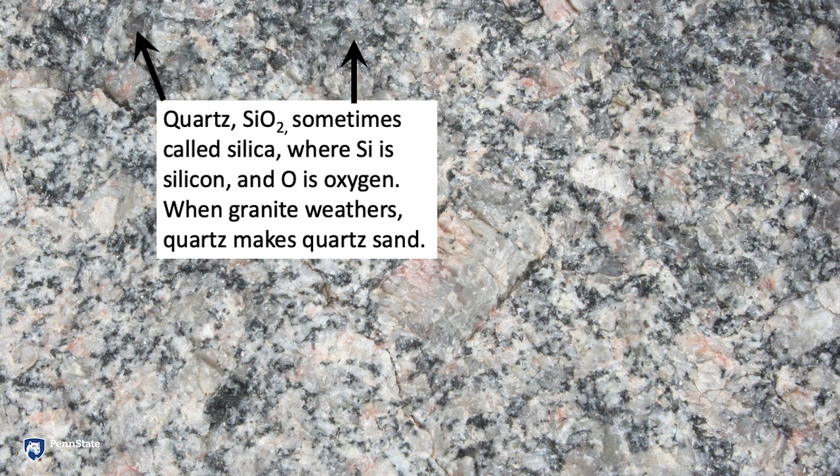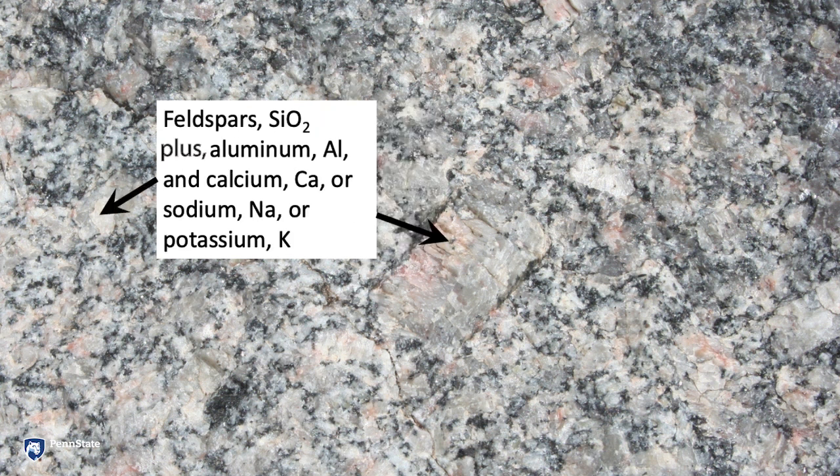When the granite weathers, the quartz basically just stays as quartz and makes quartz sand. The arrows are now pointing at feldspars. There are actually two different feldspars in here, but they are very similar. Feldspars include the silica — the SiO2 — and they all have aluminum.